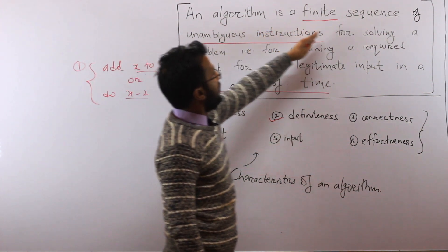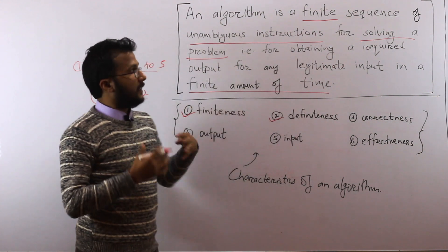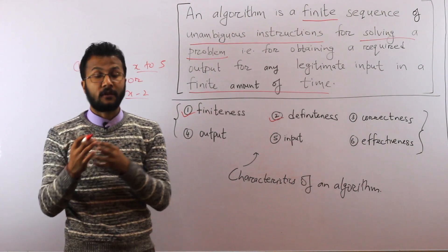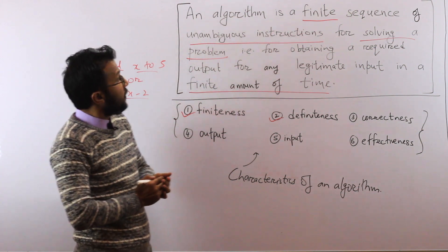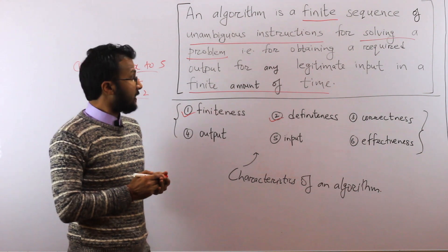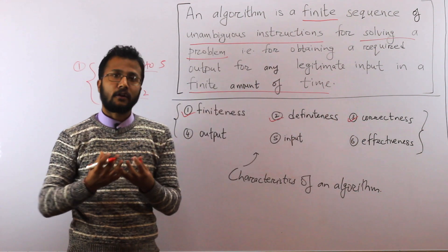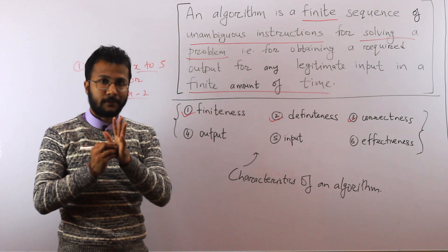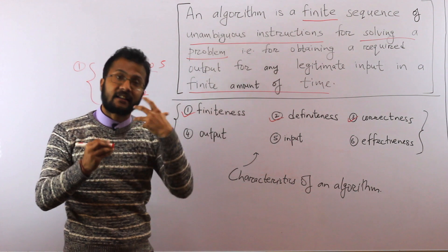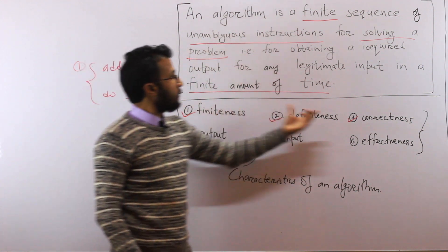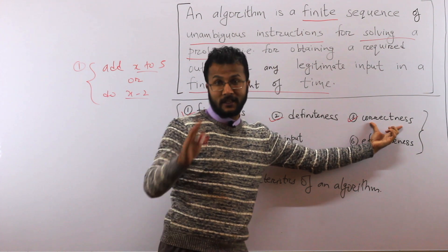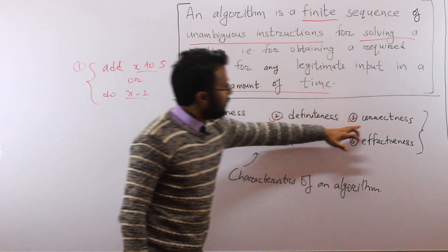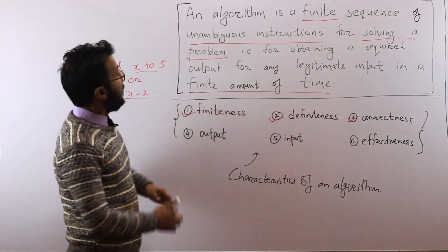The algorithm should obviously solve the given problem — that means it should give the correct output. It should correctly solve your problem, not some other problem. This is the property of correctness: your algorithm should correctly solve the problem for all valid inputs, give the correct output, and then stop. Correctness is a very important property.